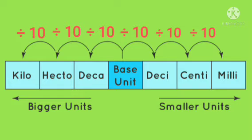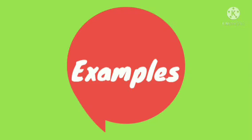And to convert the small units from milli to centi, divide by 10. Centi to deci, divide by 10. Deci to the base of the standard unit, divide by 10. And from the base to the deca, divide by 10. And so on. Now let us look at some examples.